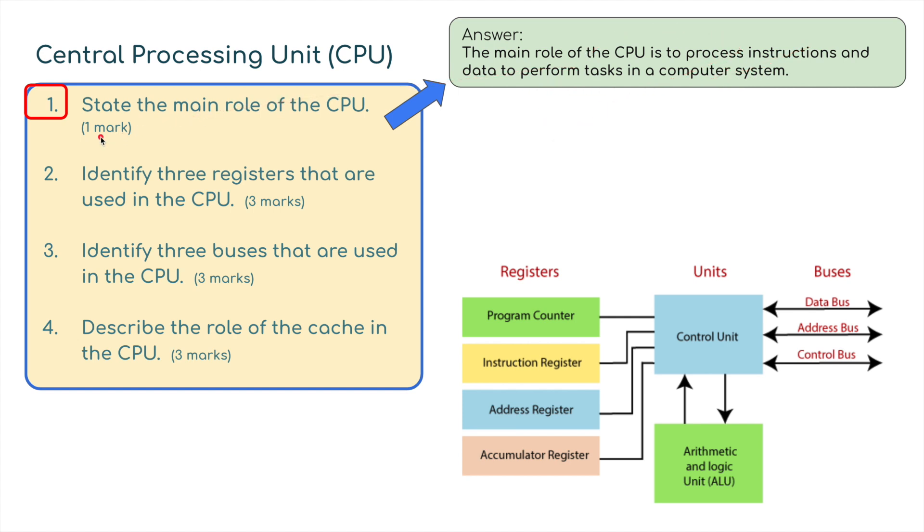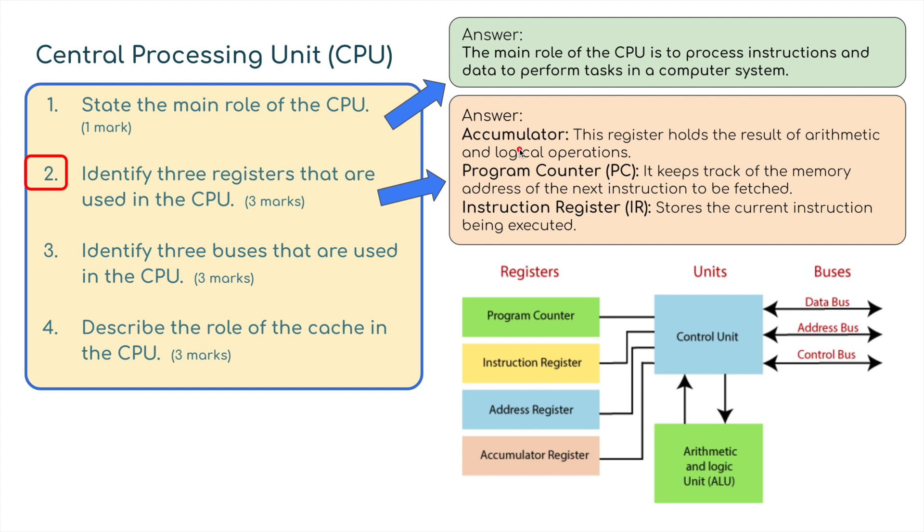Now identify three registers. Any of these three registers here: the accumulator, the program counter PC, or the instruction register IR. The accumulator holds the result of arithmetic and logic operations. The program counter keeps track of the memory address of the next instruction to be fetched. The instruction register stores the current instruction being executed.